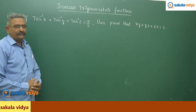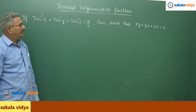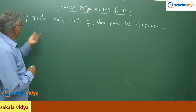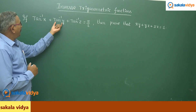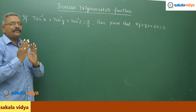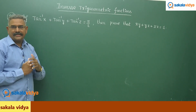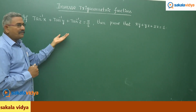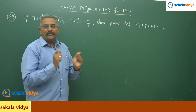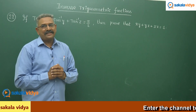Let us solve one more problem. If tan inverse x plus tan inverse y plus tan inverse z is equal to pi by 2, then prove that xy plus yz plus zx is equal to 1. If we say tan inverse x equals a, tan inverse y equals b, tan inverse z equals c, then a plus b plus c equals pi by 2, that is 90 degrees. So x becomes tan a, y becomes tan b, z becomes tan c. We need to prove tan a times tan b plus tan b times tan c plus tan c times tan a equals 1.